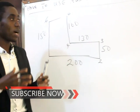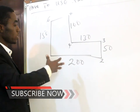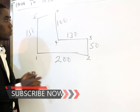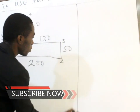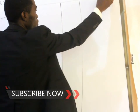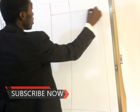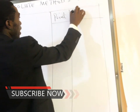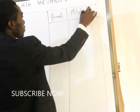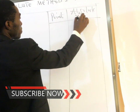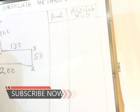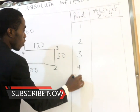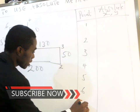Absolute means x and y coordinates. In order to use the absolute method to draw this, we need a table. First of all, you have to draw your table. So we have the point and the absolute columns. Don't forget: absolute means x and y coordinates. We have points 0, 1, 2, 3, 4, 5, 6, and then back to 1.